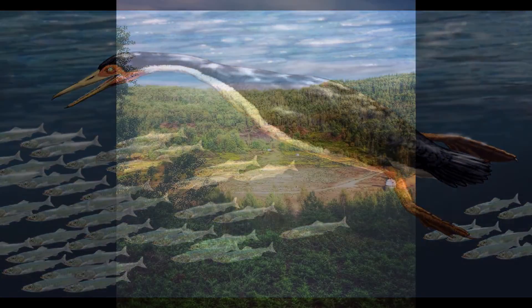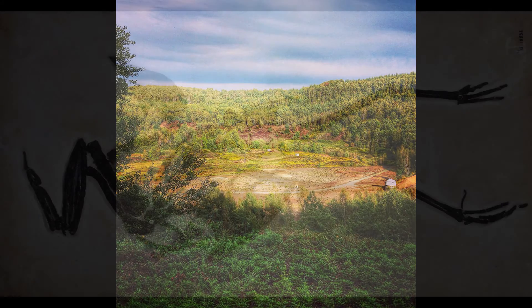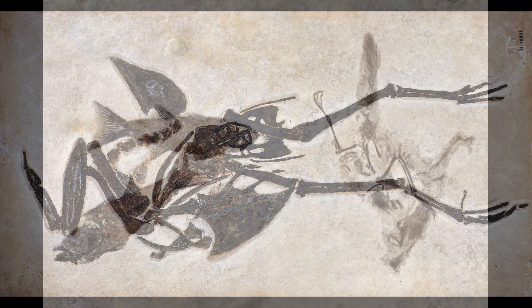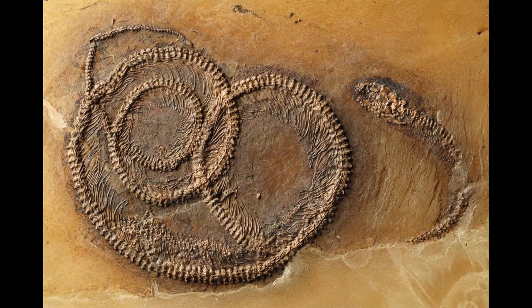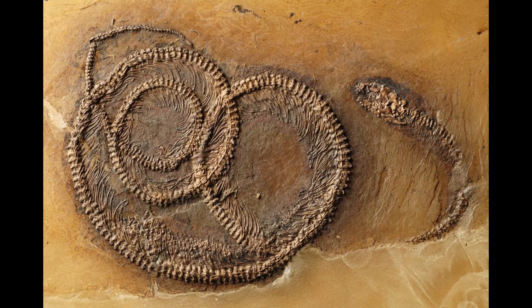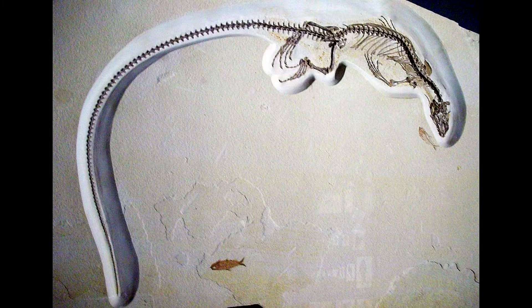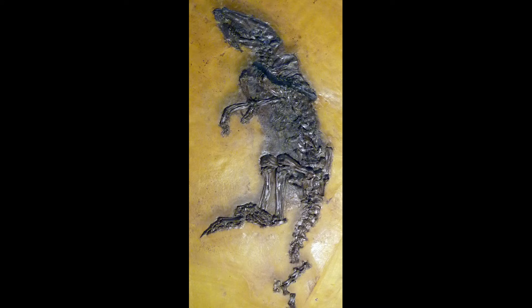The Messel pit in Germany has produced an almost unprecedented number of incredibly well-preserved Eocene tetrapods. Only the early Eocene Green River Formation sites in North America rival Messel in terms of overall species richness and levels of preservation. Due to unique environmental conditions during the Middle Eocene, a wide swath of smaller animals have been unearthed in almost perfect condition. Small mammals, birds, and squamates form the bulk of tetrapod remains at the site, with larger animals such as non-avian dinosaurs and crocodilians being noticeably scarce.